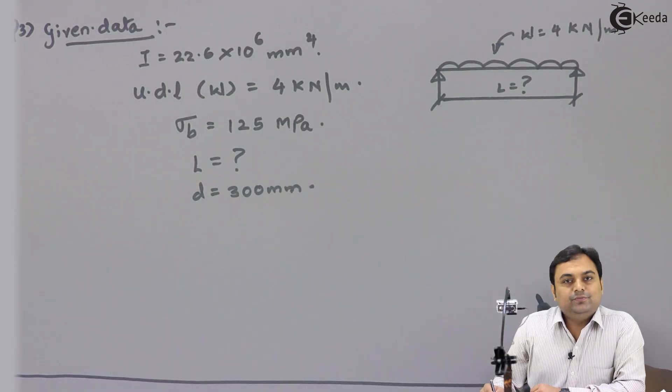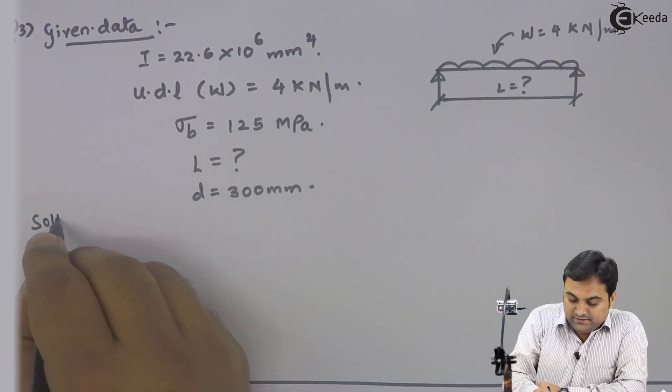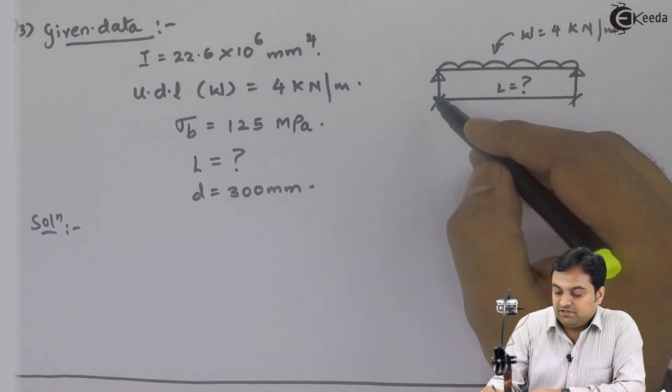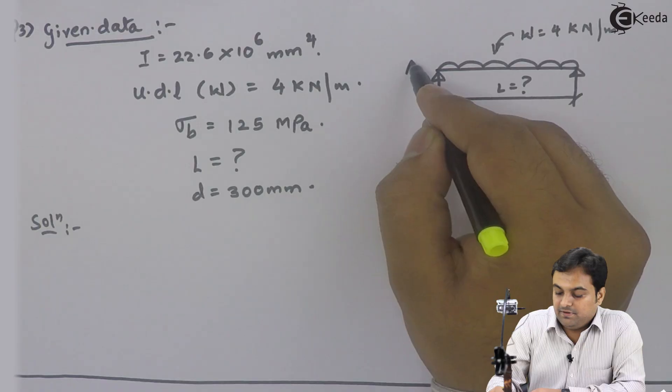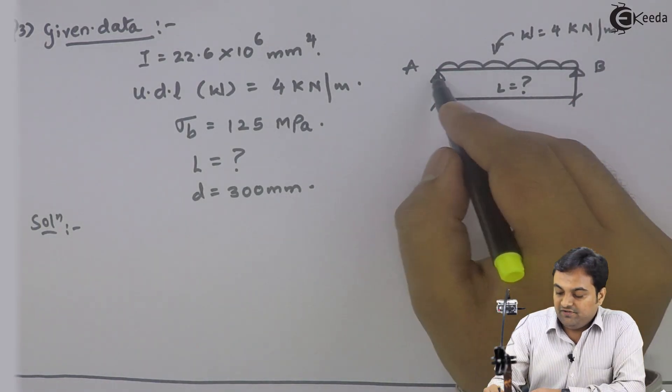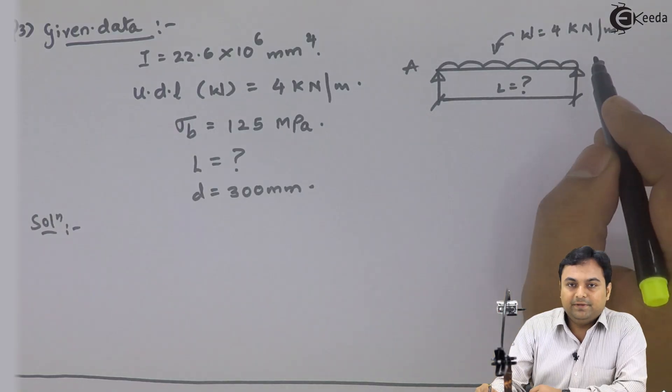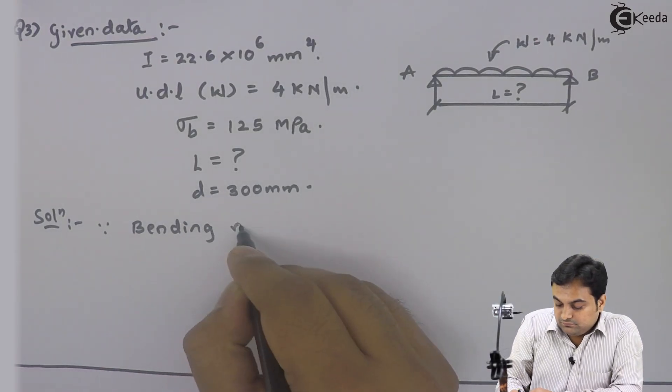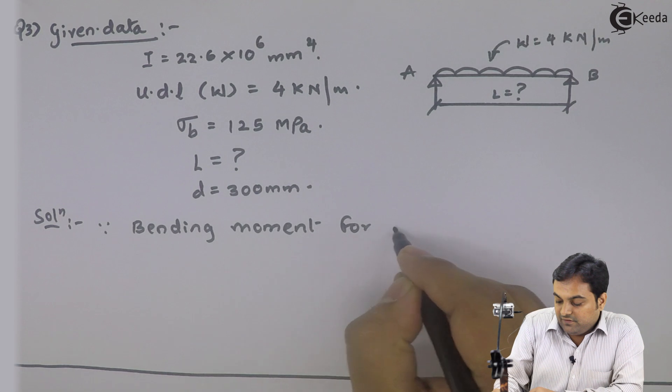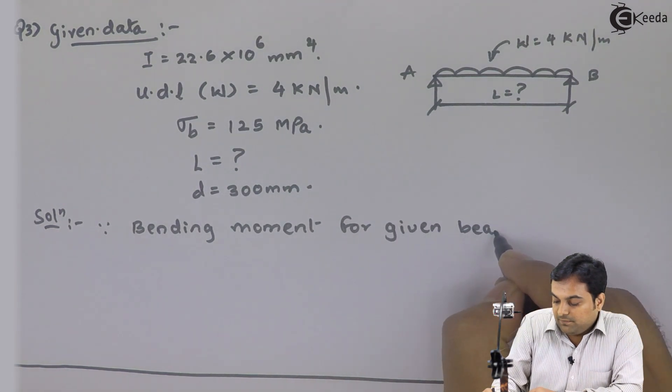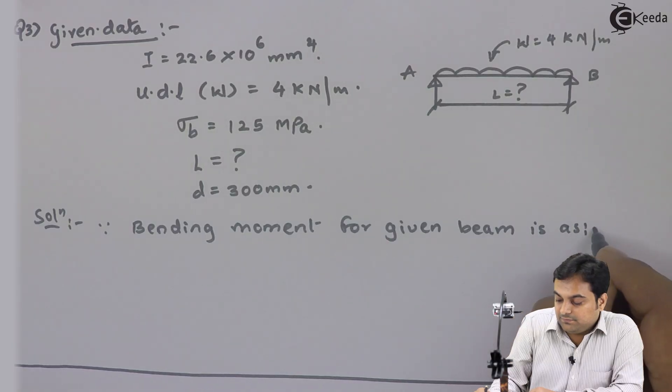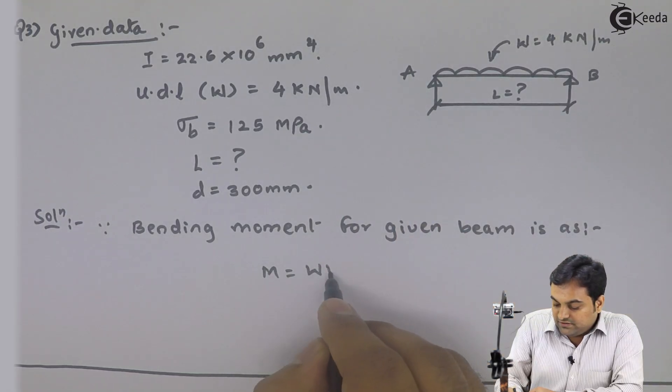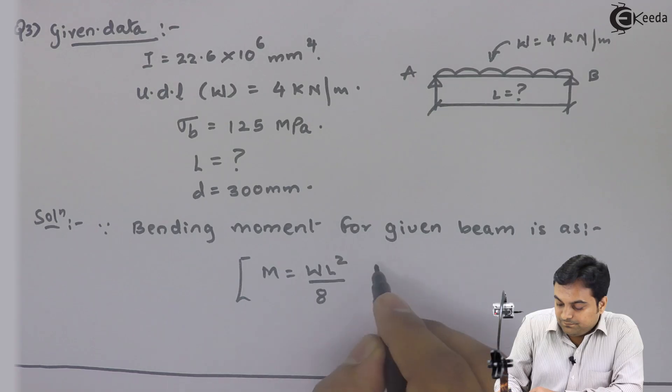Now we would be solving this question. I will write the solution. See here, first look at this beam, what kind of beam is it. Here I have a simply supported beam, I can call this beam AB having UDL. For this we will first write the bending moment. Since bending moment for the given beam is - we know bending moment for simply supported beam with UDL is WL²/8.